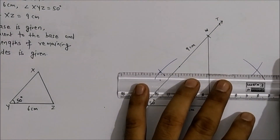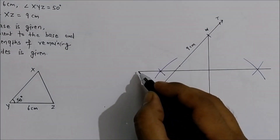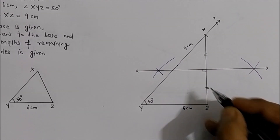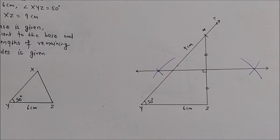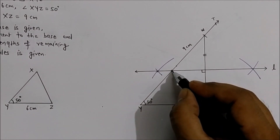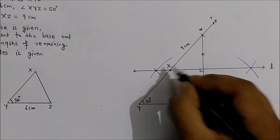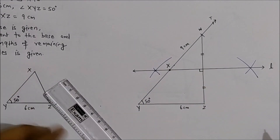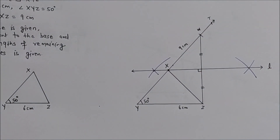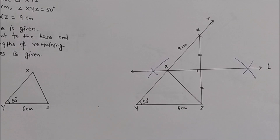Draw the perpendicular bisector of WZ. This is the perpendicular bisector — mark the perpendicular and bisector symbols. Where this line intersects ray YW, name that point X. Join X to Z. We have now got the required triangle XYZ with the given information.